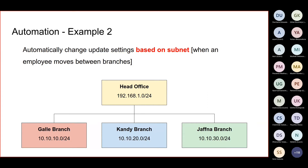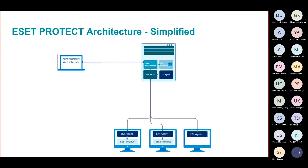The update will be downloaded from the internet only once, so the head office server will distribute the update to the entire LAN network. Looking at the architecture — this is the simplified version — most Sri Lankan organizations have a single on-prem server. In this on-prem server we have several ESET components installed. Administrators connect to this console through their laptops using a web browser. All machines and servers are managed by the ESET Management Agent (EM Agent).